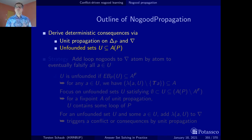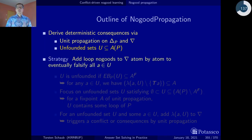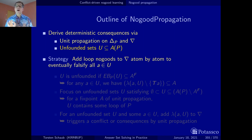Our strategy is to add loop no-goods to the dynamic no-goods in a very sparse fashion — only atom by atom for all the atoms in an unfounded set. That's more or less the idea.